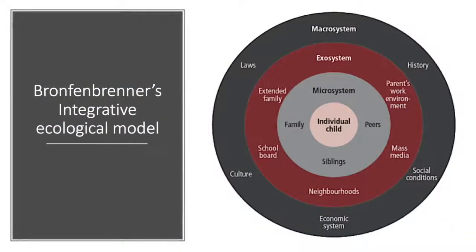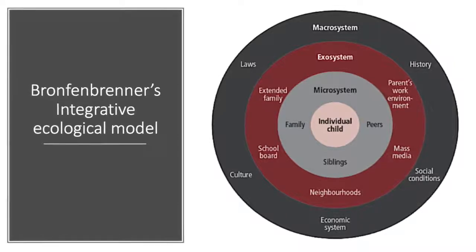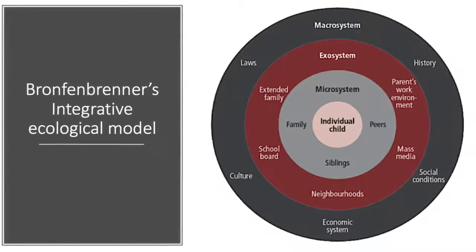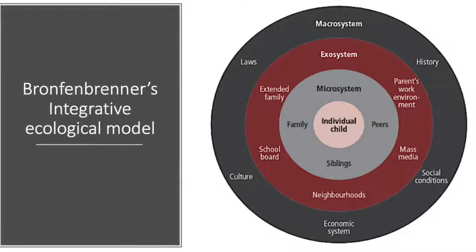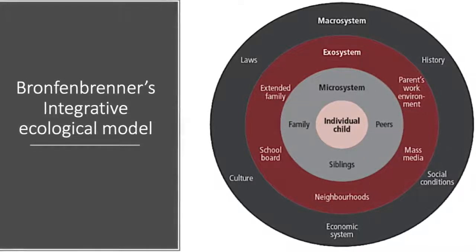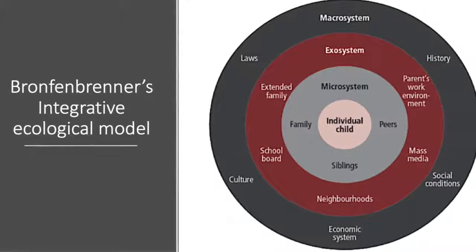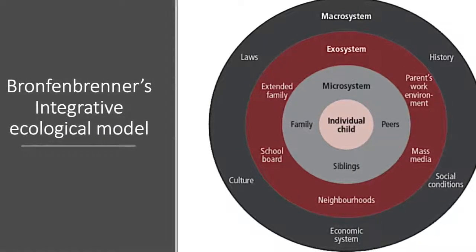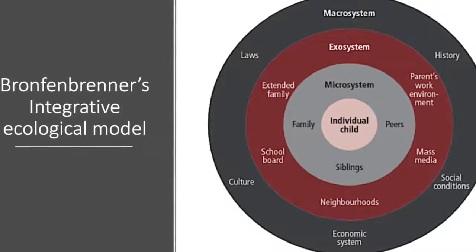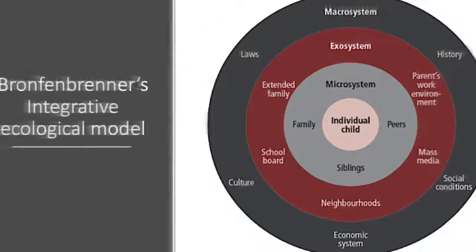Bronfenbrenner created the Integrative Ecological Model to tie in all the different developmental models based on different levels of influence and context effects on the individual. The first immediate level was the Microsystem, which is the environment of the home. The Mesosystem was the second level, which included the neighbourhood and community, like a childcare centre, playgroup, church, etc. The Exosystem is the third system and encompasses the workplace, such as whether job and social security affect the development of the individual. Finally, there is the Macrosystem — society and culture that values and socially influences views, like whether corporal punishment is acceptable, gay marriage, etc.